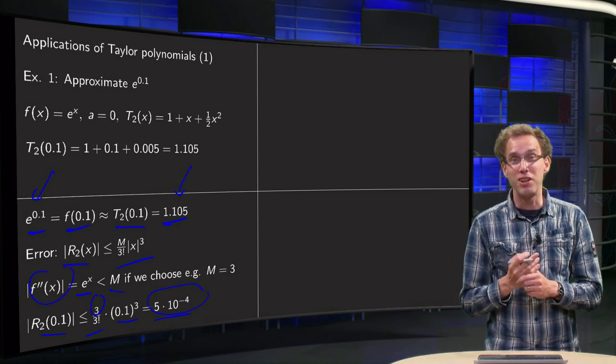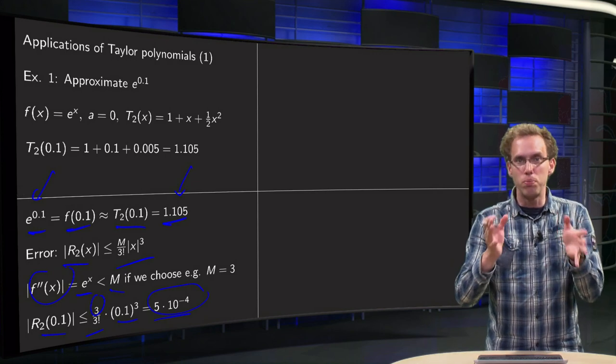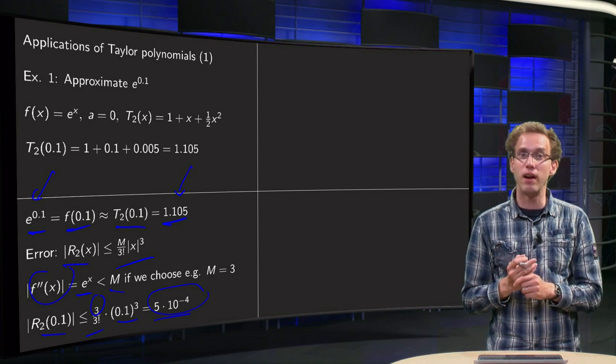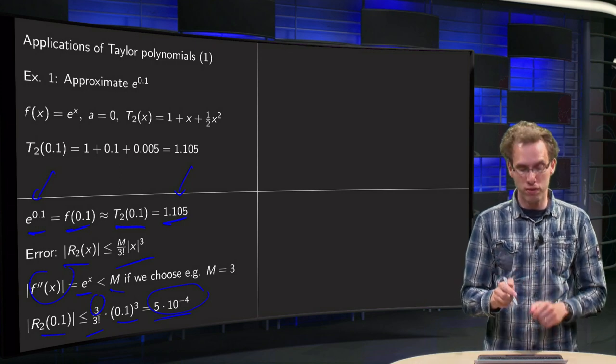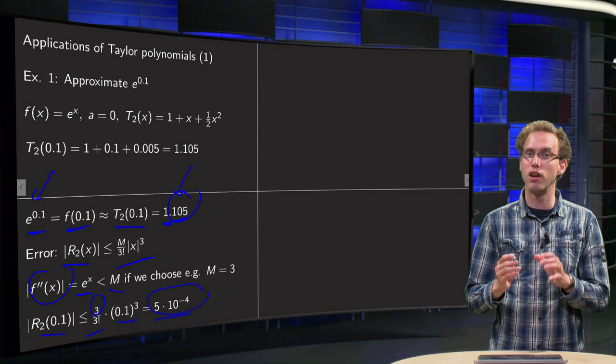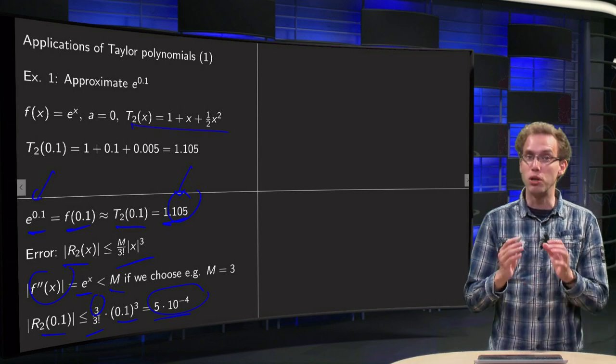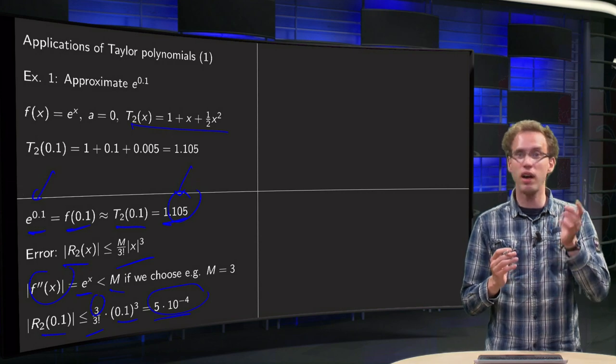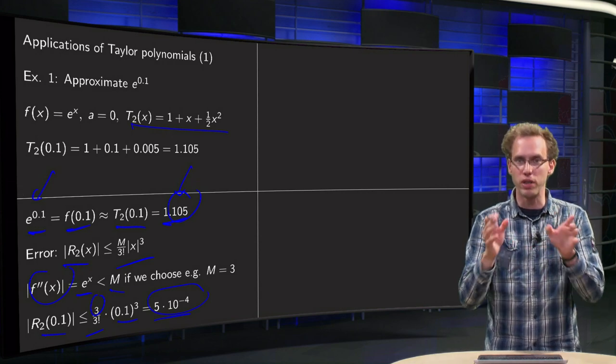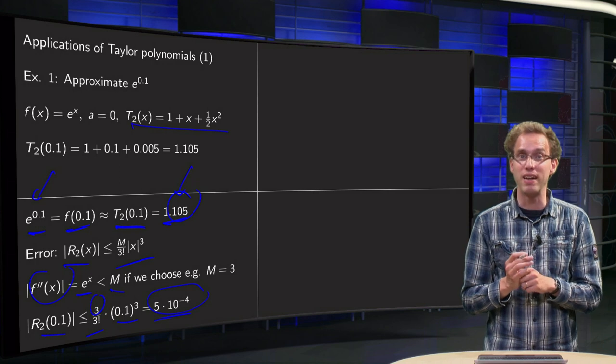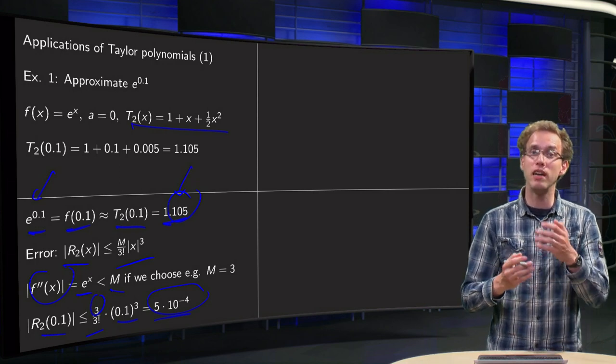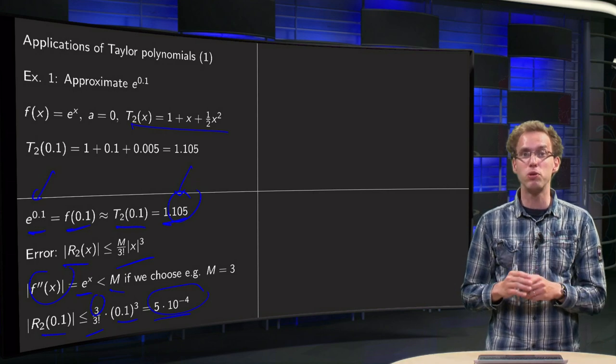So this is how the calculator works. You want to compute this stuff in a certain number of places. If you say, well 3 decimal places is enough, you see already that T2 does the job for you. If you want a few more decimal places correct, just take T3 or T4 or whatever, it is a bit bigger than a polynomial, and in this way you can compute all those numbers.